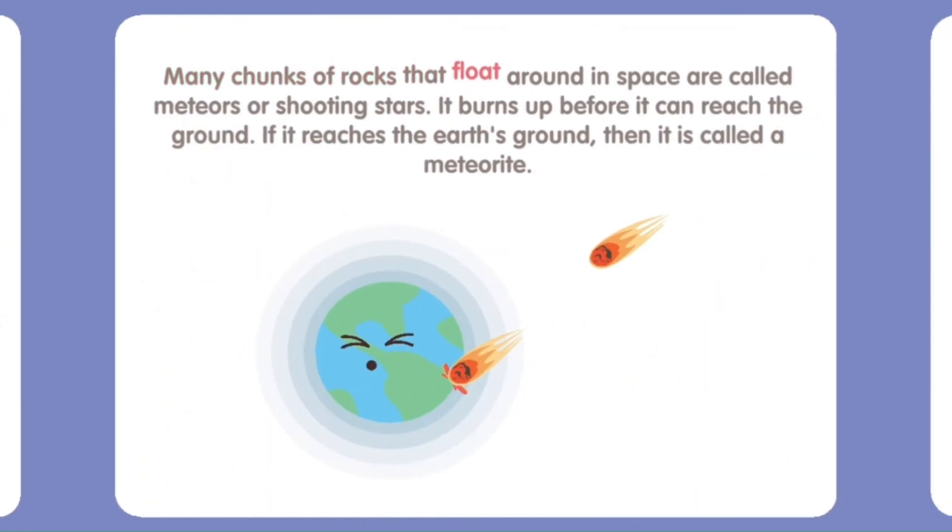Many chunks of rocks that float around in space are called meteors or shooting stars. It burns up before it can reach the ground. If it reaches the Earth's ground, then it is called a meteorite.